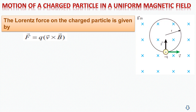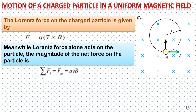The Lorentz force on the charged particle is given by F vector is equal to Q into V into B vector, which is the magnetic field. The magnitude of the net force on the particle is summation F_i equal to F_m, which is equal to QVB.